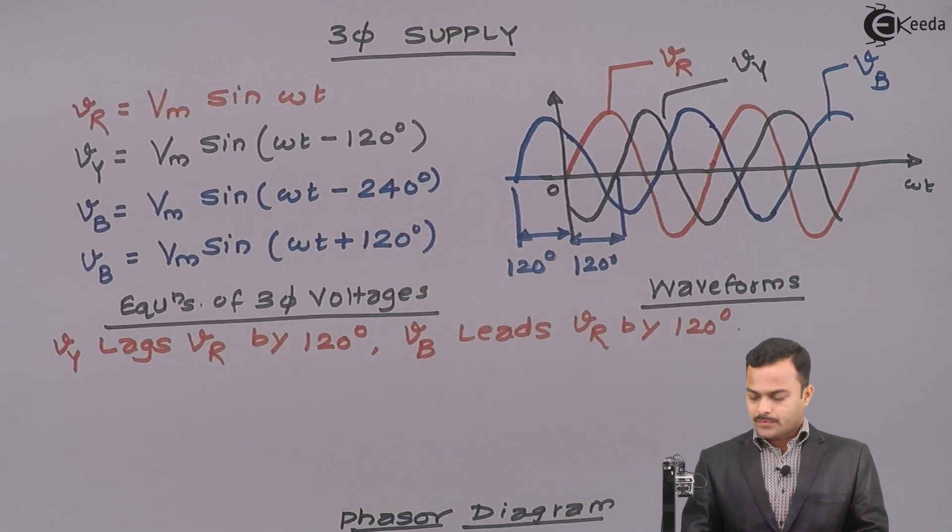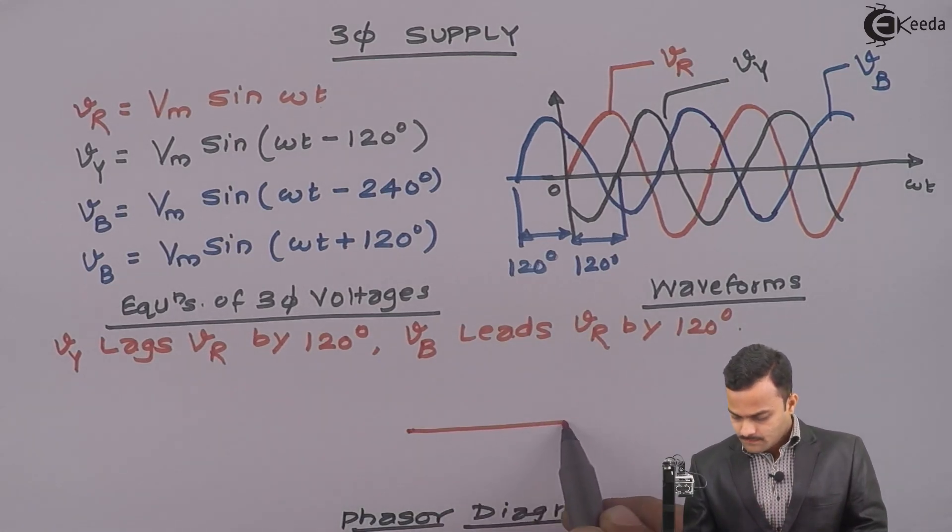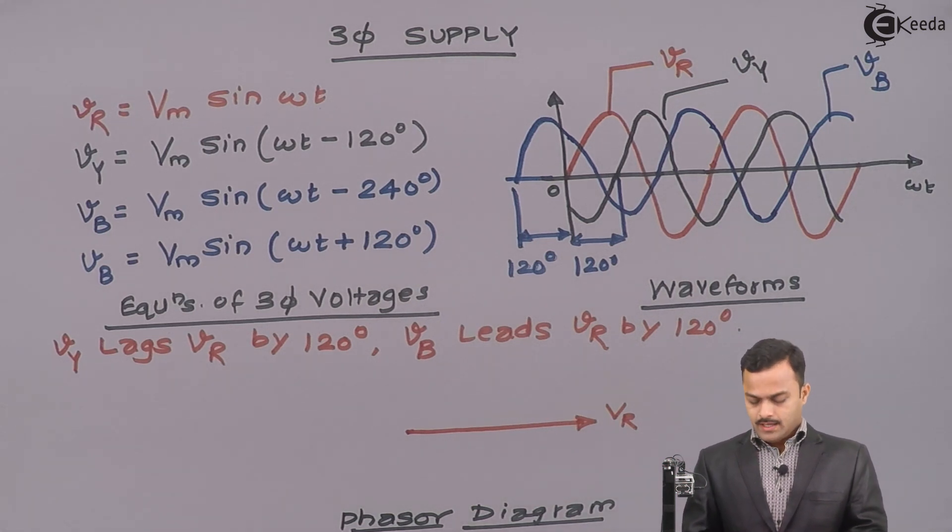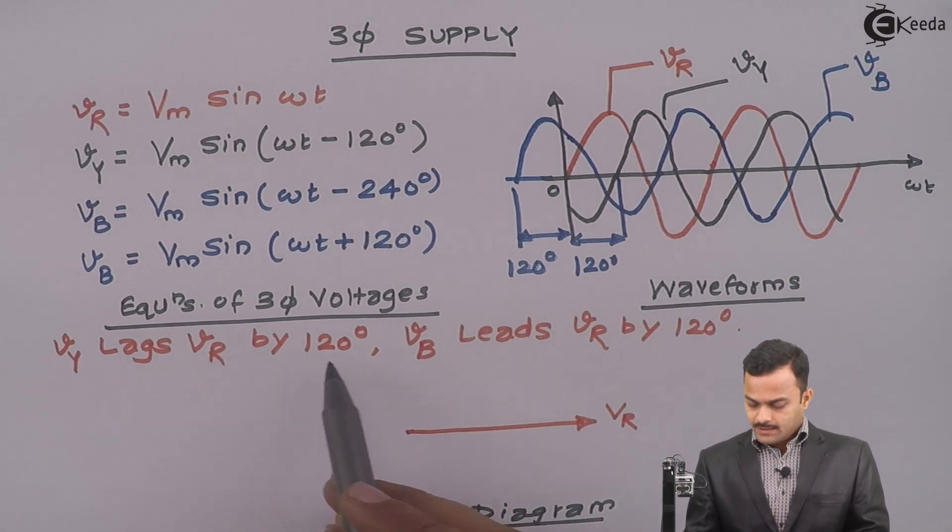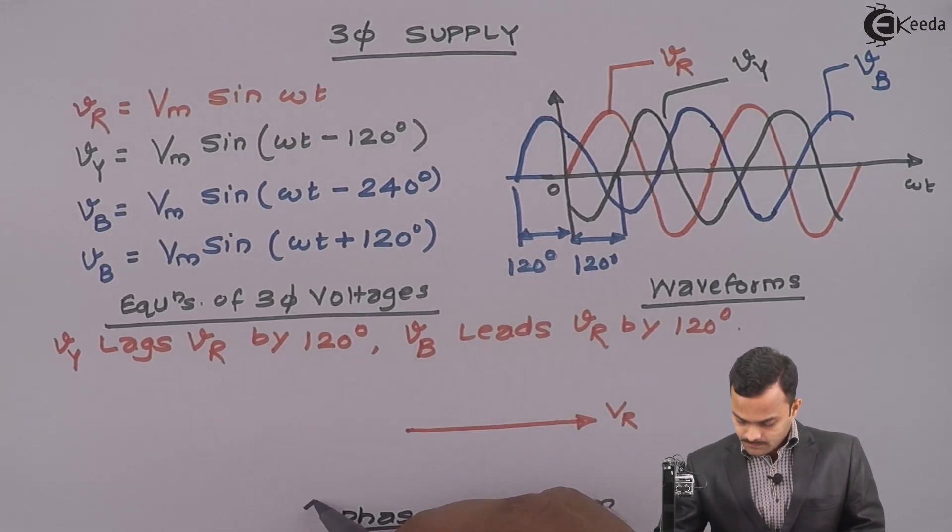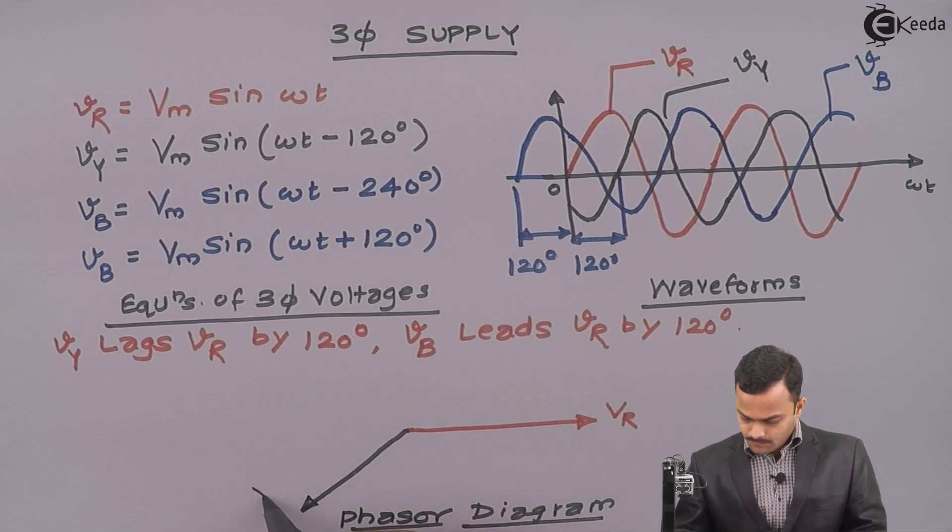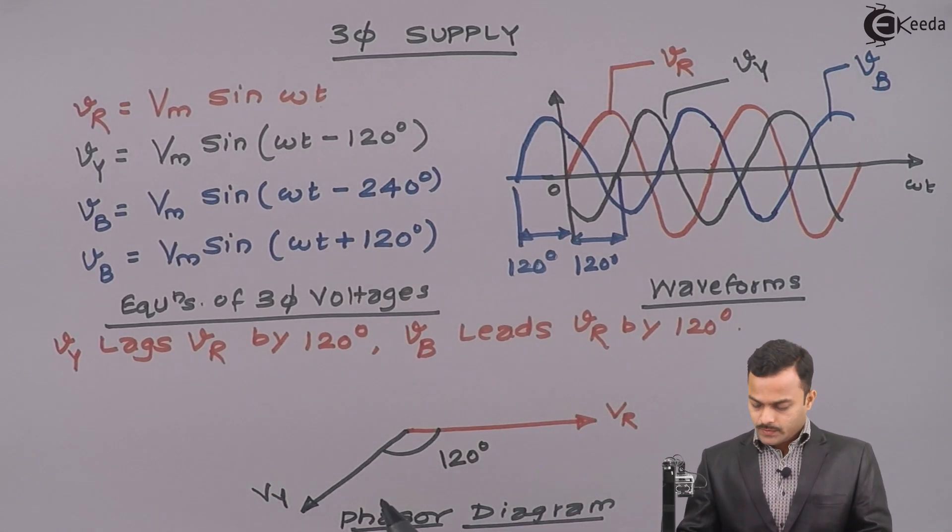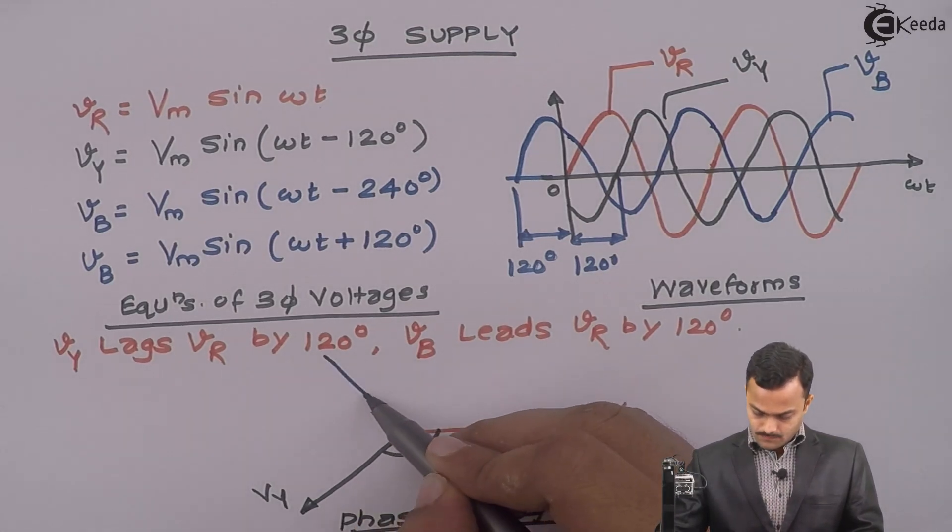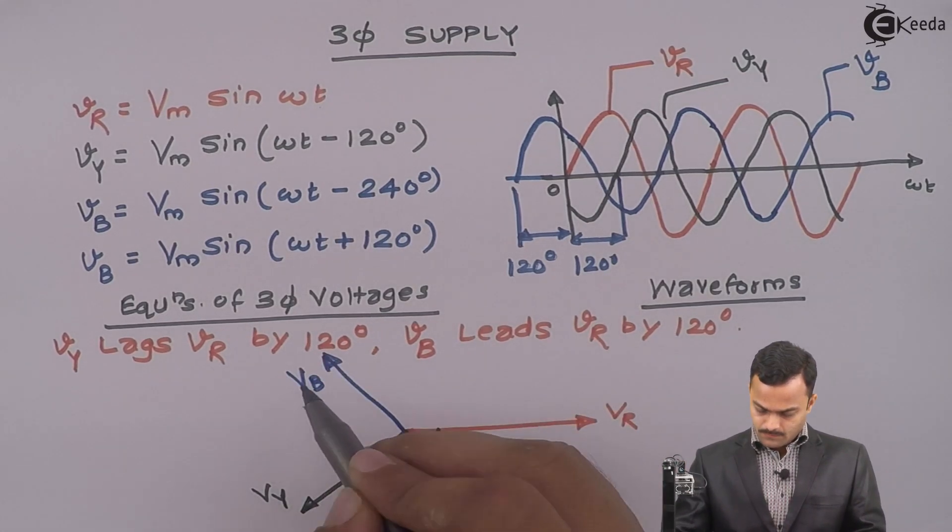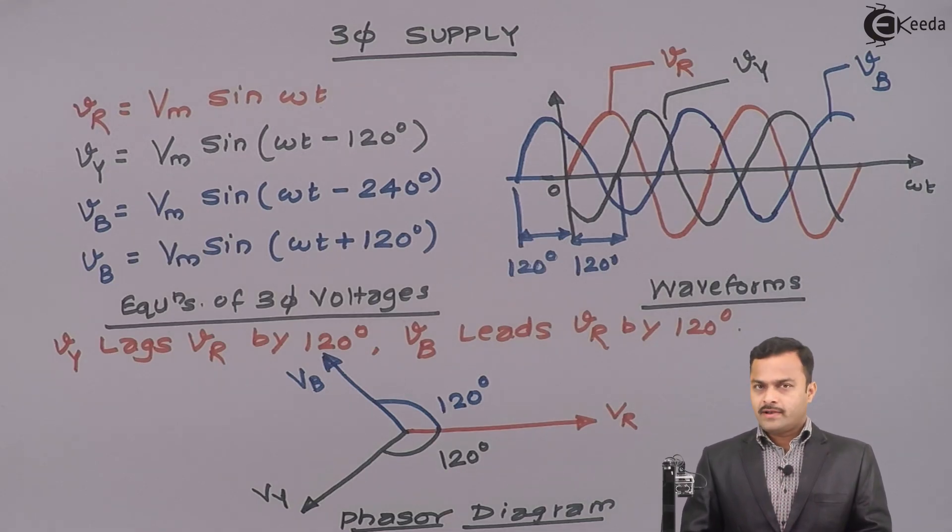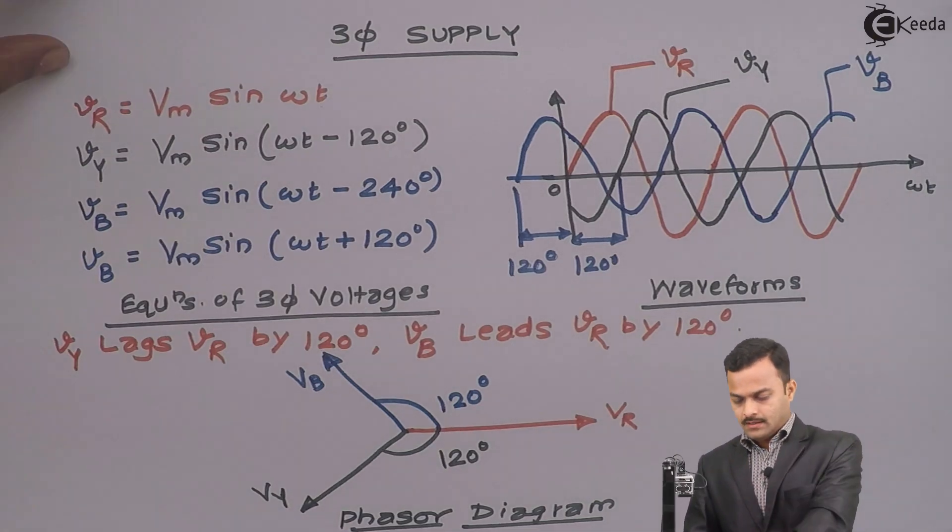Vr is a reference because the phase angle is 0. It's an RMS value. Vy lags Vr by 120-degree. So, it will be like this. And Vb leads Vr by 120-degree. This is all about equations, waveforms, and phasor diagram.